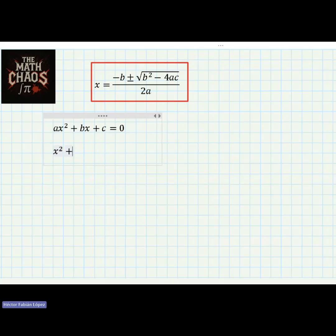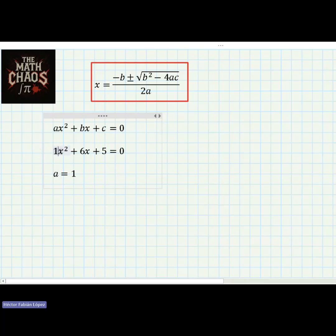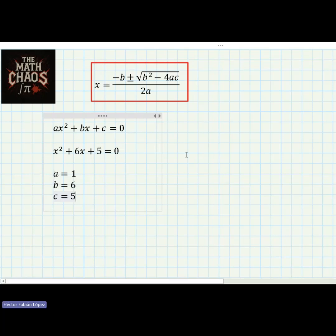Here is our first example: x squared plus 6x plus 5 equals zero. First, we have to find the coefficients a, b, and c. Here we have a equals to one, because when we don't have a coefficient written, x squared is multiplied by one. Then b equals to six, and c equals to five.